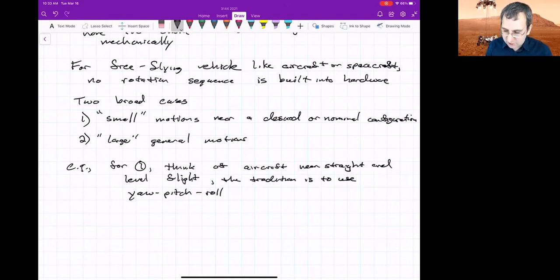Even for the small motions case, you want to pick coordinates so that you're as far away as possible from the singularity. So straight and level flight means pitch is zero or close to zero. So you're very far away from the pitch down and pitch up, which are the singularities. So that's a reasonable choice. There's others where level flight would be far away from the singularity, but that's one.